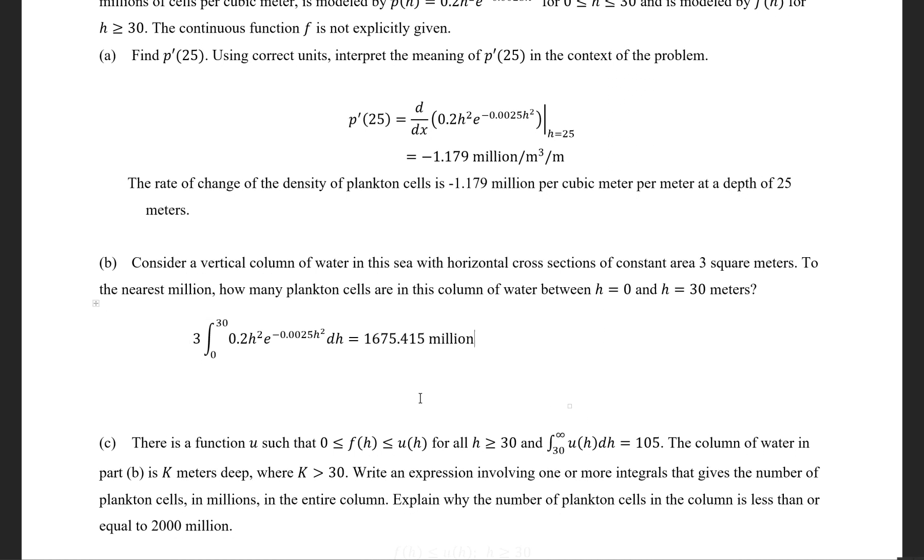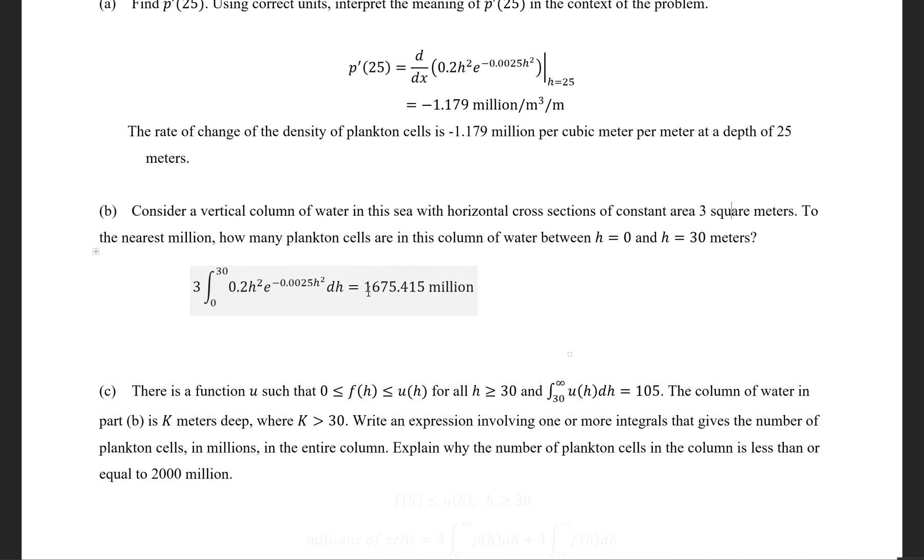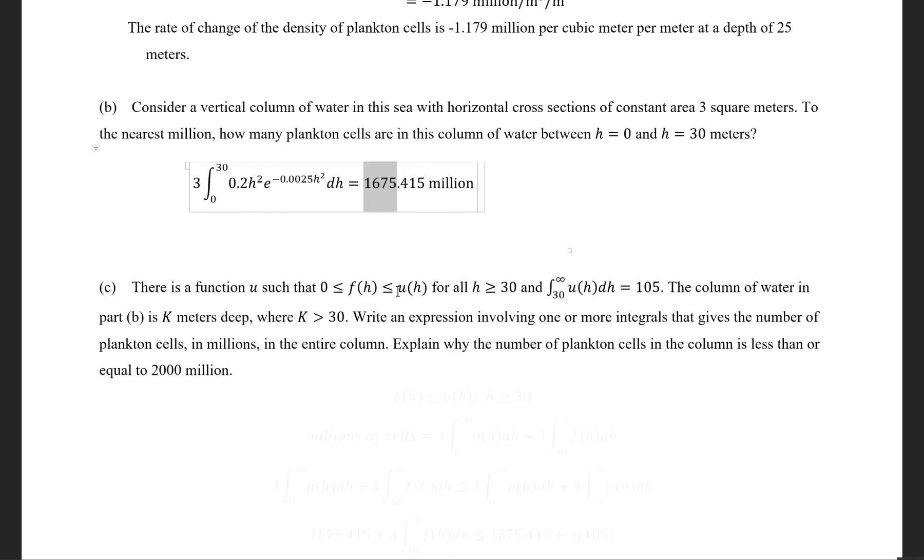That gives you 1.675415 million. In other words, in a column that has a base area of 3 square meters, there would be about 1,675 million cells of plankton.